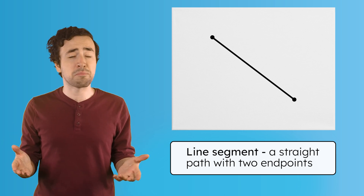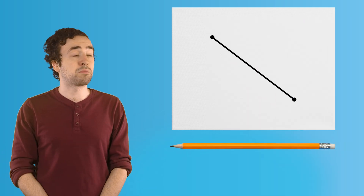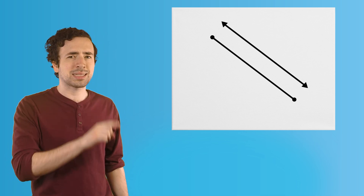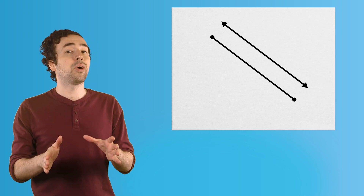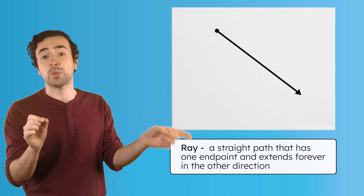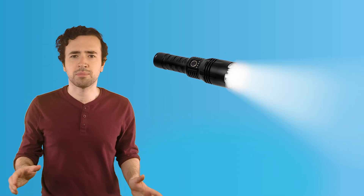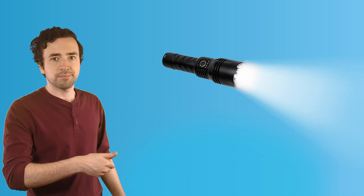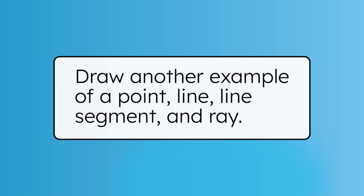Can you find an example of a line segment around you? The top of a door frame would be a line segment, since it starts and stops at a specific point. Another example could be a pencil. Could we have a type of line that is a mix of a line and a line segment? Yes, we can, and it's called a ray. It's a straight path that has one endpoint and extends forever in the other direction. Imagine shining a flashlight — the beam of light is like a ray. It starts at the flashlight, but then it keeps going and going. Pause the video here and draw another example of each term we've learned so far: a point, a line, a line segment, and a ray.